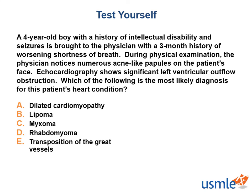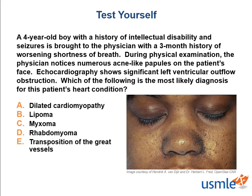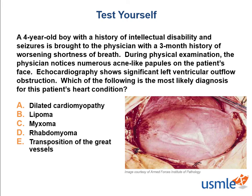All right, to review: a four-year-old boy with a history of intellectual disability and seizures is brought to the physician with a three-month history of worsening shortness of breath. During the physical exam, the physician notices numerous acne-like papules on the patient's face. Echocardiography shows significant LV outflow obstruction. What is the most likely diagnosis for this patient's heart condition? The intellectual disability, seizures, and papules on the face point to tuberous sclerosis. The associated papules on the face would be angiofibroma. And which heart finding is tuberous sclerosis associated with? That would be cardiac rhabdomyomas, a condition that can decrease left ventricular filling, resulting in Kussmaul's sign.